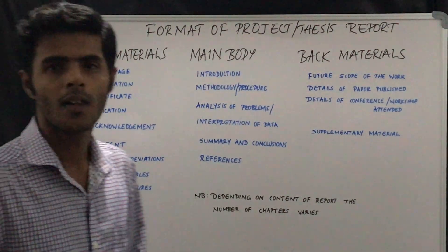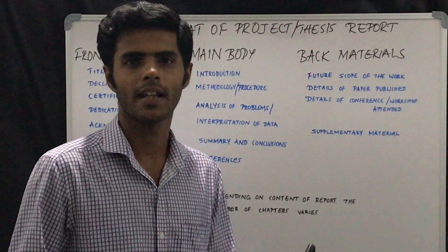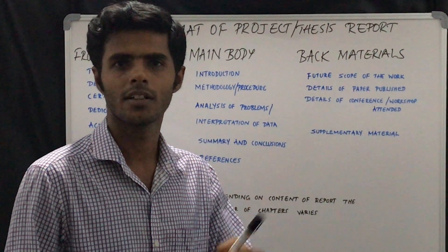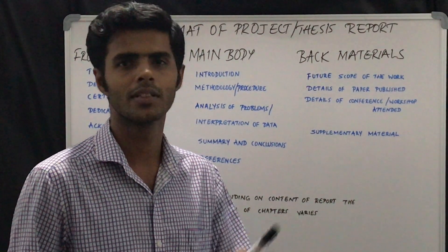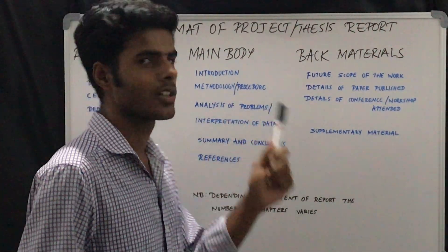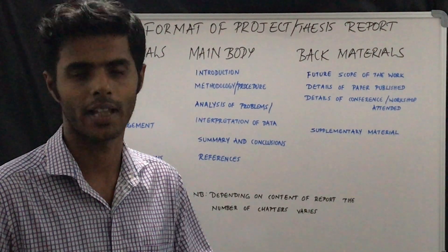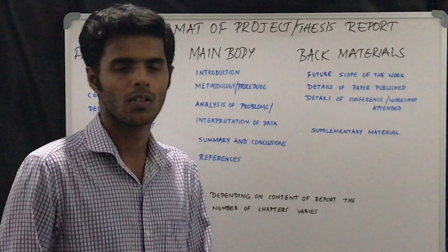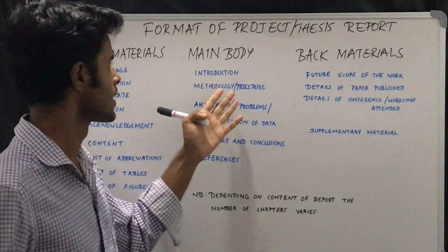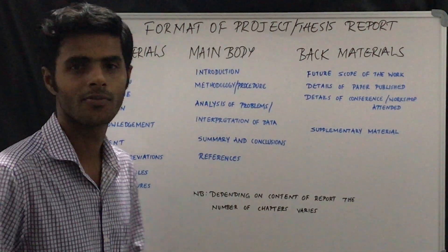Coming to the second part — the main body — the first section will be the introduction. You are going to write the introduction about your dissertation, which can be an introduction to the institution, to your research work, or to the industry where you did your project. The second one will be the methodology or procedure — what procedure or methodology you followed throughout your project or research work. The third one will be the analysis of problems or interpretation of data.